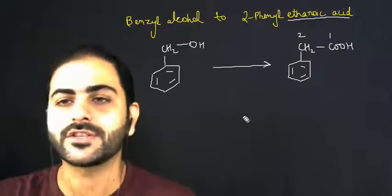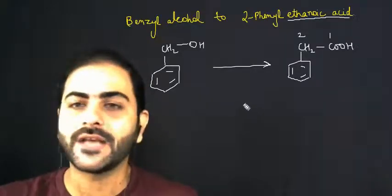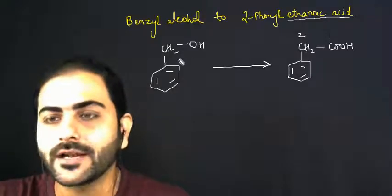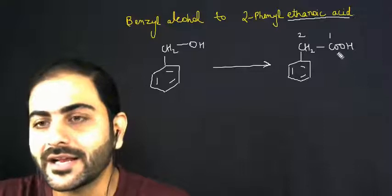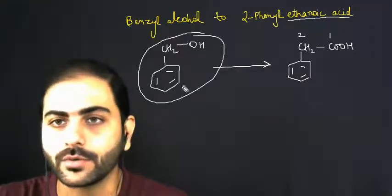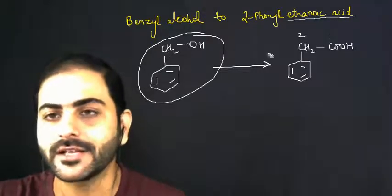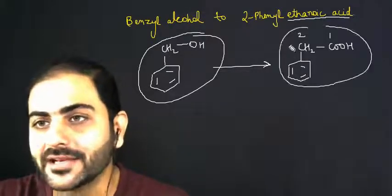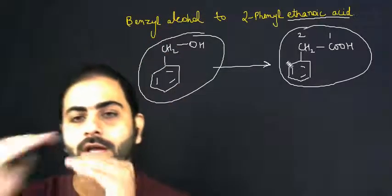So this is the conversion which we want to achieve. Now, here is a very special thing. If you look at it, benzyl alcohol to 2-phenyl ethanoic acid - at the same time, my carbon has increased. If you look at this whole compound, it has 7 carbons. It has 6 in benzene and here is overall 8 carbons. So in general, this is the step-up reaction. Carbons will increase.